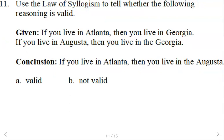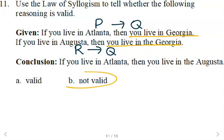Number 11, use the law of syllogism to determine whether the following is valid. If you live in Atlanta, then you live in Georgia. So that can be if P then Q. If you live in Augusta, so that's R, if R, then you live in Georgia, we've already seen that, so that's Q. Can we make the conclusion, if you live in Atlanta, then you live in Augusta? Notice our conclusions are the same, but we do not have the conclusion of one matching up with the hypothesis of another. So we cannot use the law of syllogism here. It is not a valid statement to say if you live in Atlanta, then you live in Augusta. That does not make sense here.